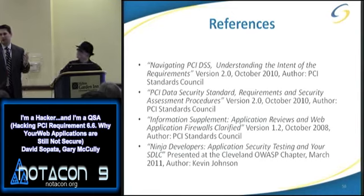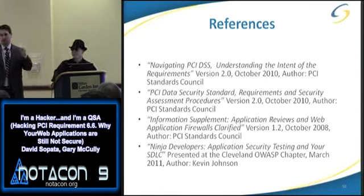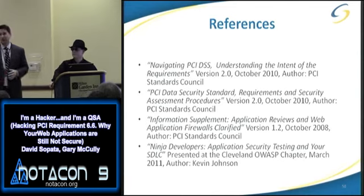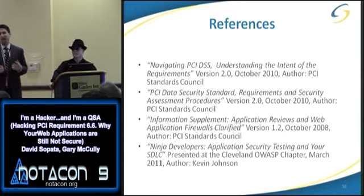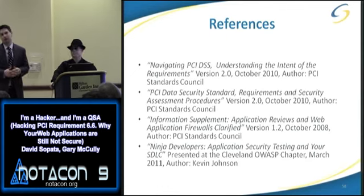That's talking about different layers of the OSI model. Web application firewalls operate at the higher layer — around layer 7. Network segmentation, which is actually required by PCI, protects at the network layer down. Network segmentation does help, but the application itself would still be vulnerable.